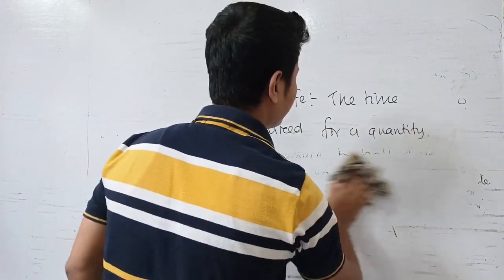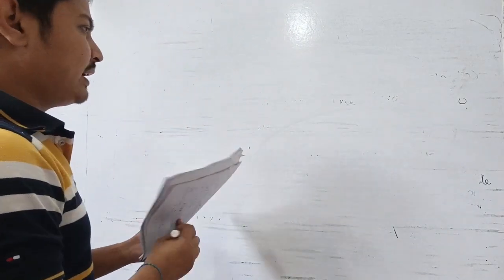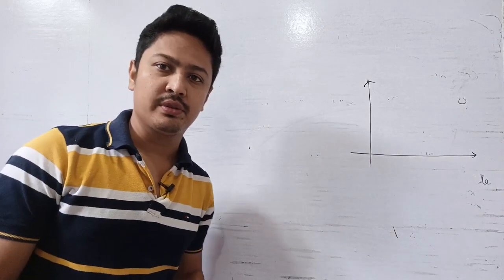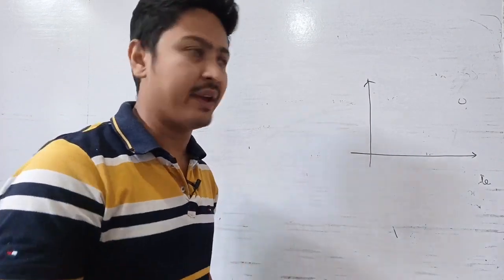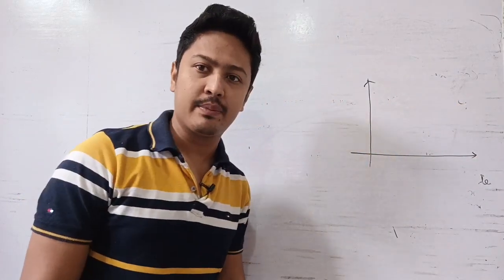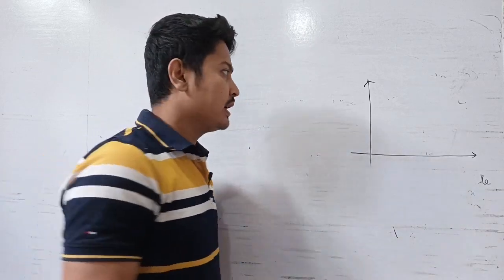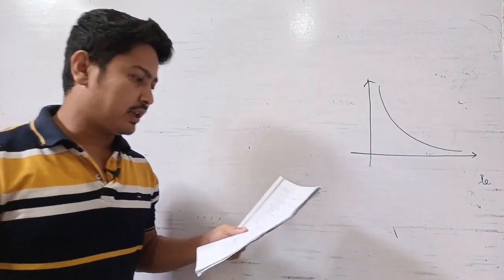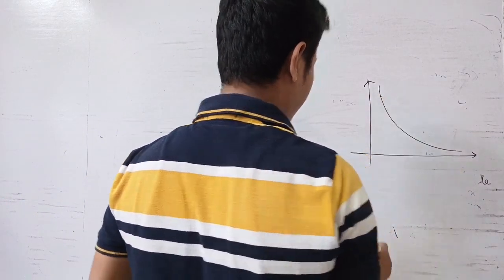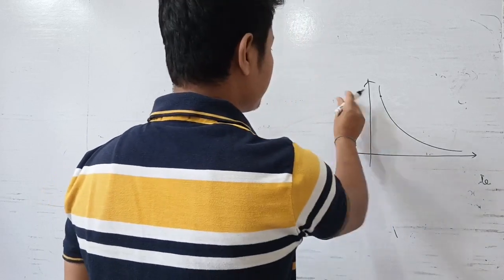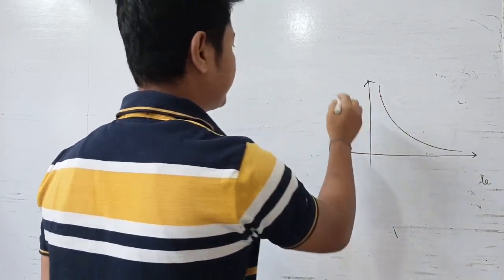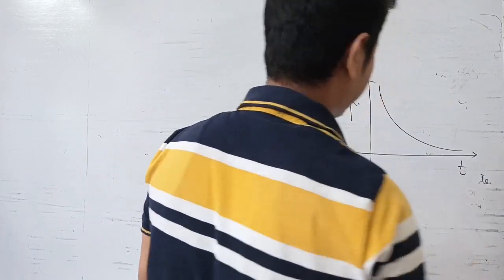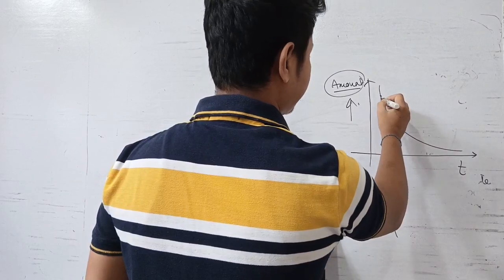We are going to calculate half-life, and I will explain it diagrammatically. Consider the exponential decay and radioactivity compartmental model. Suppose initially at time zero we have a certain amount of a radioactive element, and we track how that amount changes with respect to time.